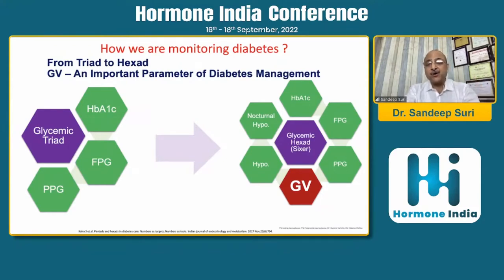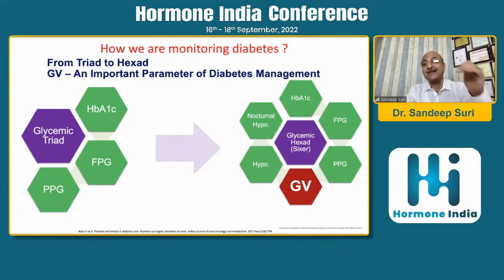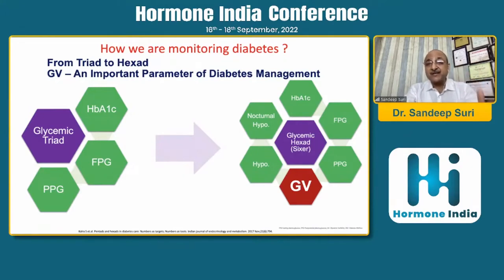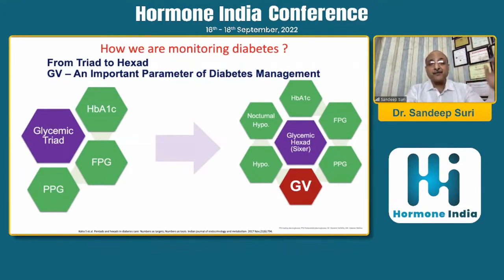Now we have moved on from the glycemic triad to include HbA1c, fasting plasma glucose, and postprandial glycemia under control, with overall hypoglycemia decreased, nocturnal hypoglycemia decreased, and importantly targeting glycemic variability. We are willing to move from triad to a hexad of monitoring in diabetes.